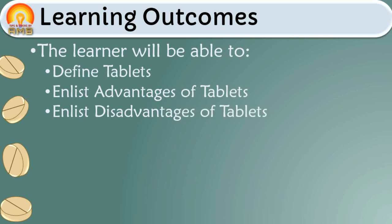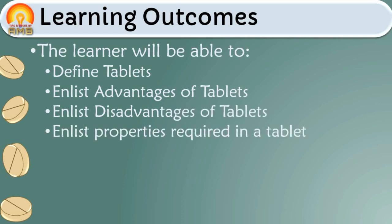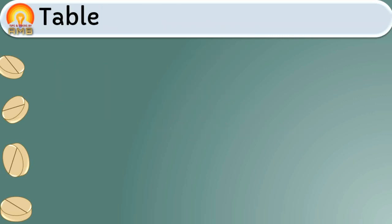We will also enlist properties required in a tablet. Majority of drugs are administered orally to achieve systemic effects. Tablets and capsules are the preferred dosage forms administered by oral route. About 70 percent of drugs or medicaments are available in tablet forms.